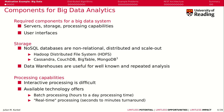A couple of typical examples are the Hadoop Distributed File System, which we will look at next week, and Cassandra, CouchDB, Bigtable, and MongoDB. There are also data warehouses that are quite useful for well-known and repeated analysis. The difference to NoSQL databases is that data warehouses can handle very well multidimensional data that is typically very dense.